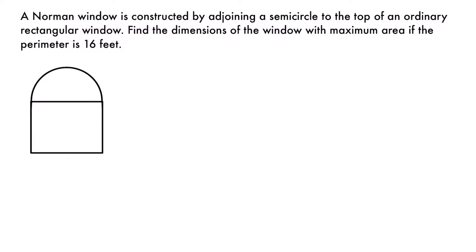We want a primary equation that we're going to take the derivative of, and then a secondary equation or constraint that will allow us to use that primary equation. But before we can write down any equations, we need to label our diagram.